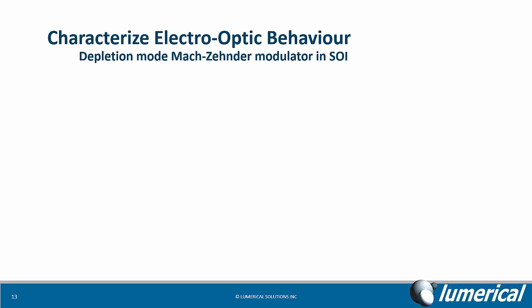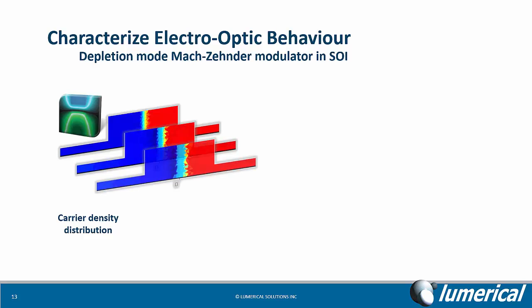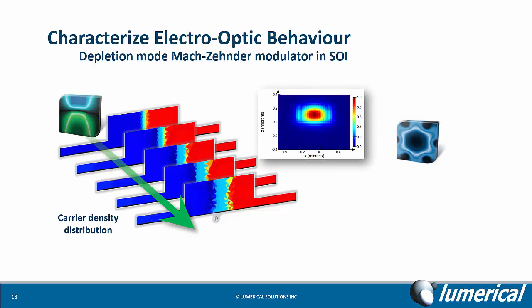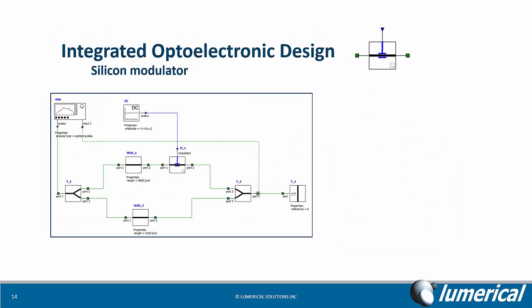For active devices, like the electro-optic modulator, we can extract the waveguide carrier density with Lumerical's device as a function of increasing bias. This will modify the refractive index of the waveguide, and mode solutions can then be used to calculate how the effective index is affected by these changes. These results can then be exported into InterConnect to simulate different types of modulator configurations, such as ring modulators or Mach-Zehnder modulators.